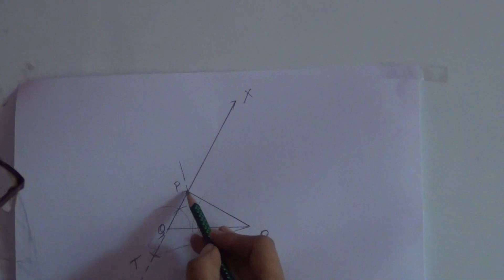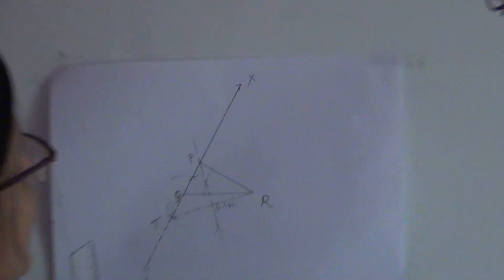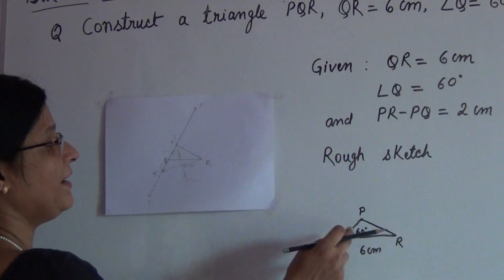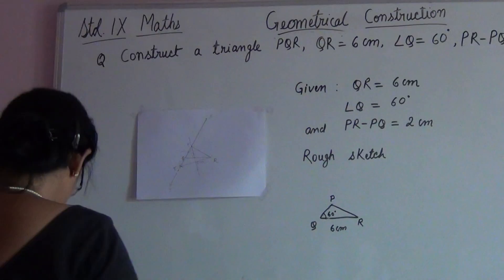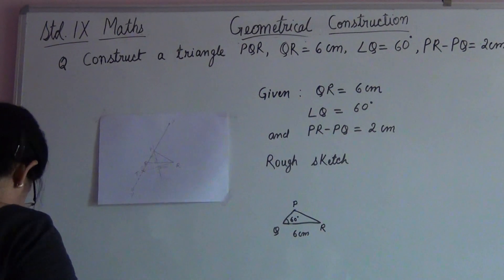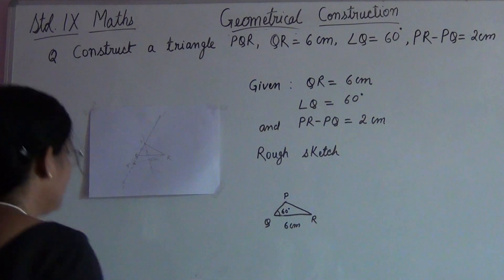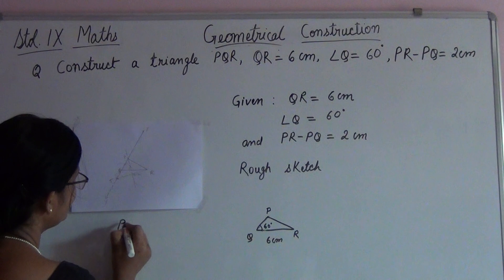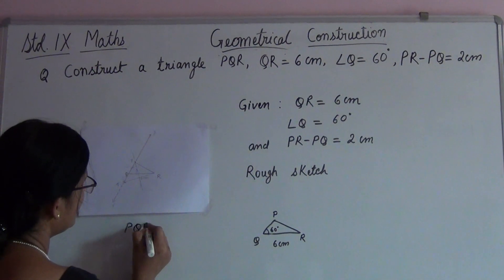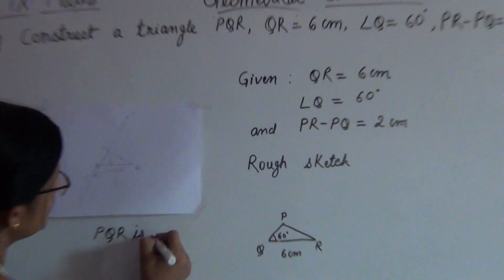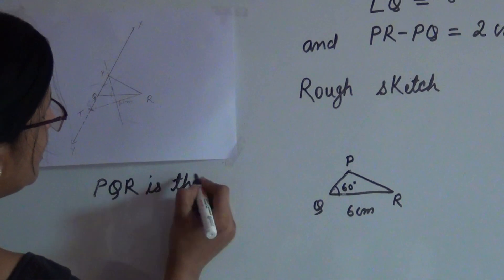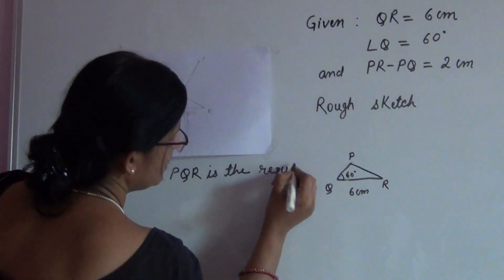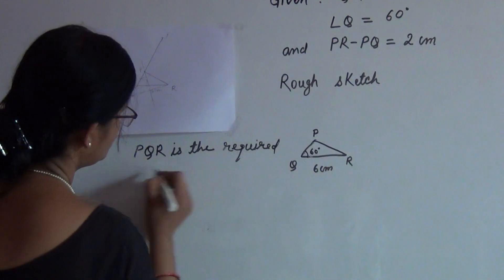Right. So PQR is the required triangle. So you can see that whatever we have drawn earlier, it is exactly similar to that. So now we can write here that triangle PQR is the required triangle.